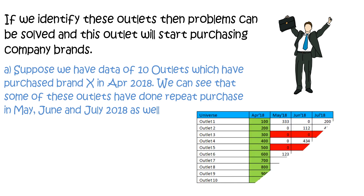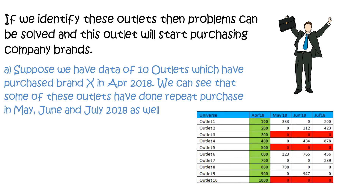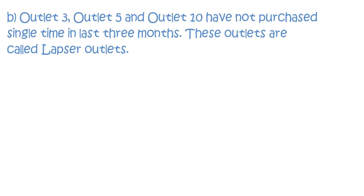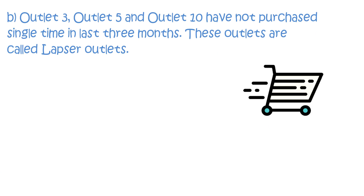We can see that some of these outlets have done repeat purchases in May, June, and July 2018 as well. Outlets 3, 5, and 10 have not purchased a single item in the last 3 months. These outlets are called Lapsed Outlets.